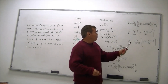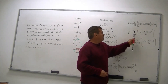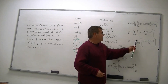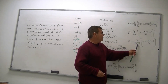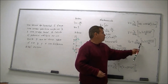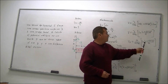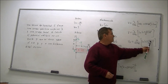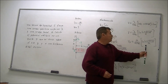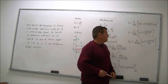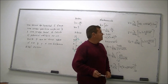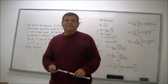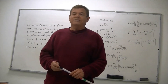O bien, sustituimos el valor de lambda, que es Q sobre L, y nos quedaría Q sobre 4πε₀L multiplicando el logaritmo natural de (L + √(A² + L²)) sobre A. Ese sería el potencial en el punto P de este ejercicio.